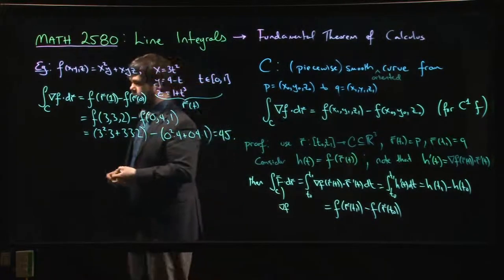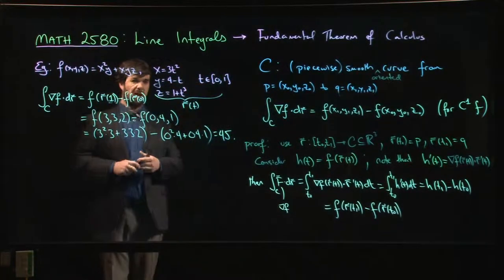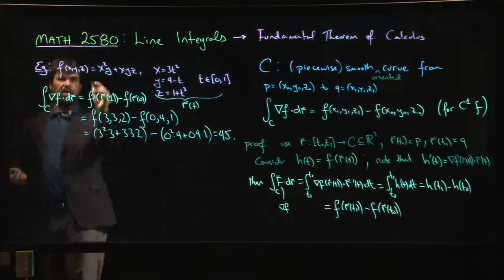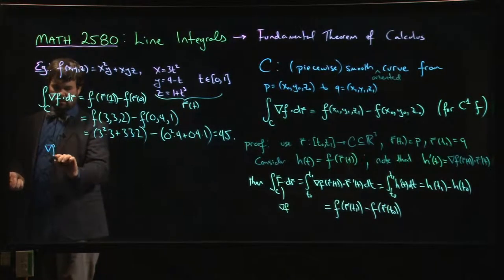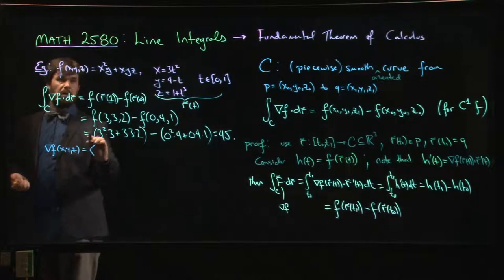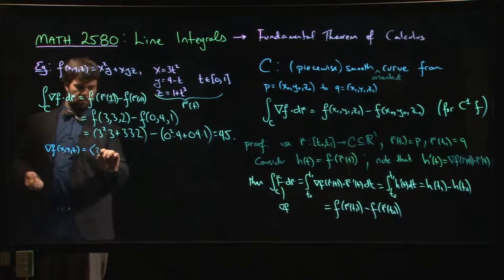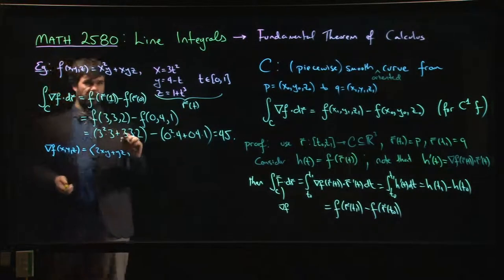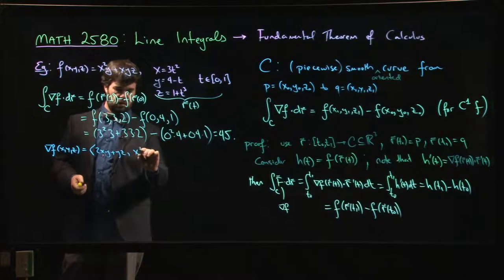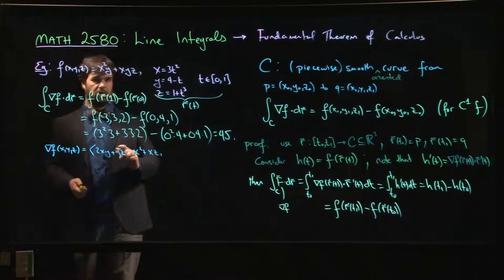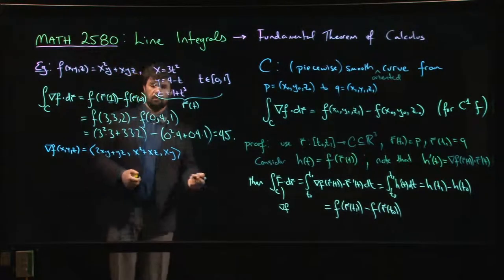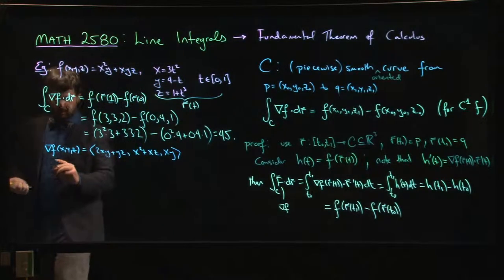So of course if we want to make sure that the fundamental theorem works, we could evaluate this in more than one way. The other way we could do this, and I don't think I'll go through all the details here, but we could also say, hey I know what the gradient is. The gradient of f, it's going to be 2xy plus yz, and then it's going to be x squared plus xz, and then it's going to be xy. All right, there's my gradient, I could calculate the gradient.